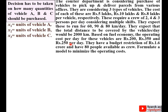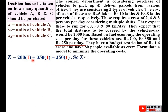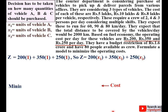The operating cost per day for these vehicles are Rs.200, Rs.350 and Rs.250 per day. So the total cost Z is equal to 200x1 plus 350x2 plus 250x3. And obviously since this is the cost, our objective function should be minimized. So we can write: Minimize Z = 200x1 + 350x2 + 250x3. This is the objective function.